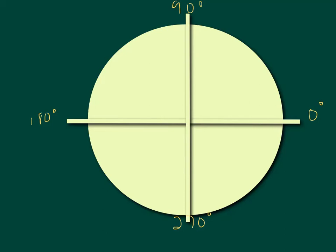Let's talk about this thing called the unit circle. It's going to help us organize our information about sine, cosine, and tangent for various common angles.